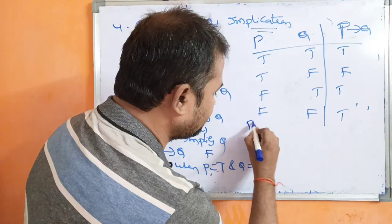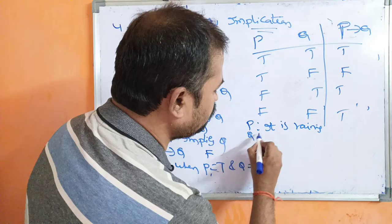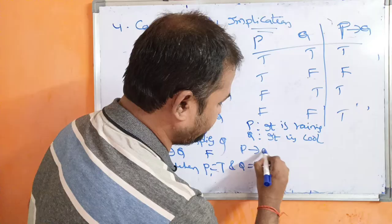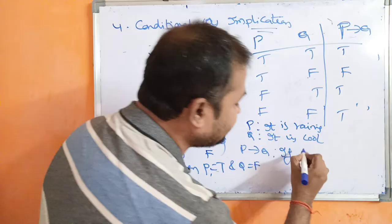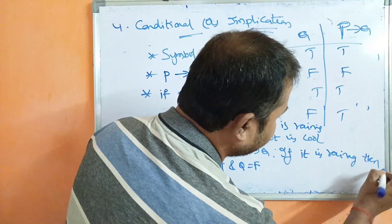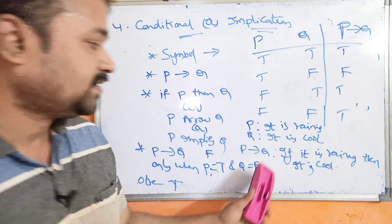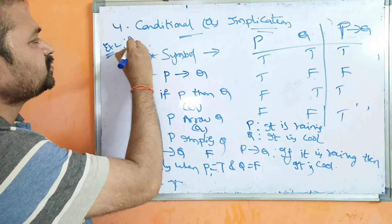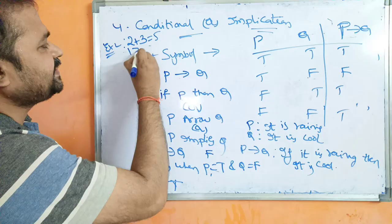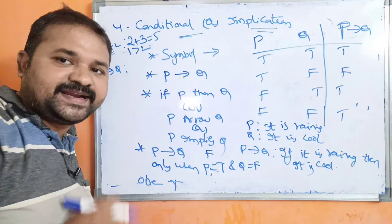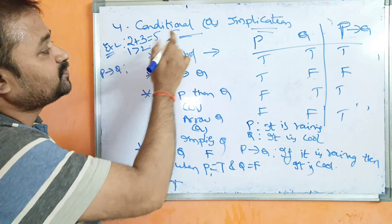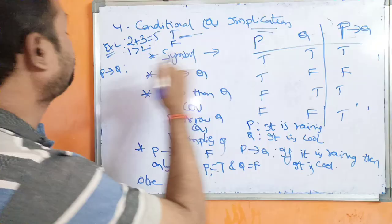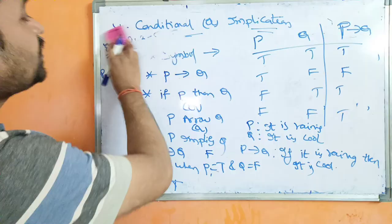Examples for conditional: Example 1: P is 'It is raining,' Q is 'It is cool.' Then P→Q is 'If it is raining, then it is cool.' Example 2: P is '2+3=5' (true), Q is '1>2' (false). So P→Q is true→false, which gives false. That is about conditional, or implication.